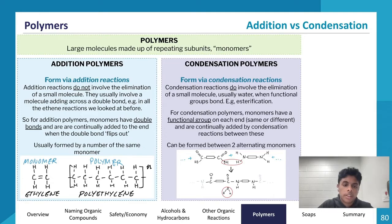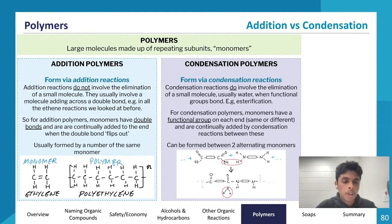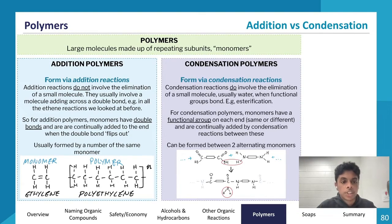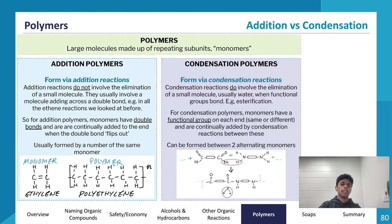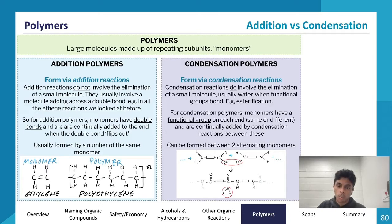Now we'll go into polymers, which is one of the final parts. Polymers unfortunately involve a lot of memorization. Polymers are essentially large molecules of repeating units or subunits called monomers. We have addition polymers, which form via addition reactions where a double bond or triple bond opens up to add more units. Condensation polymers, on the other hand, form via condensation reactions, and water is always a byproduct.